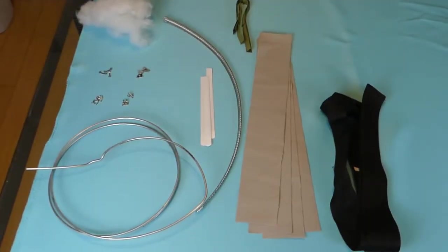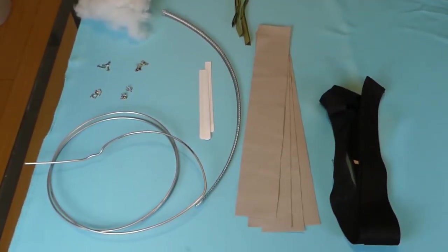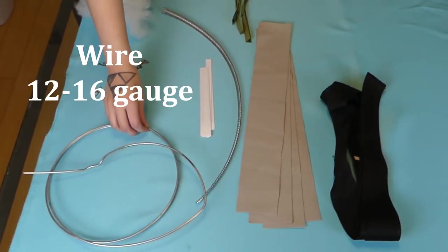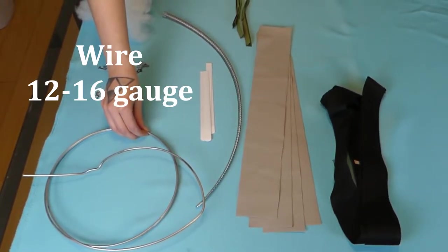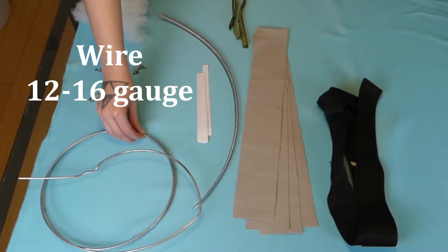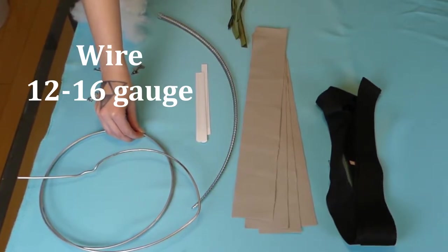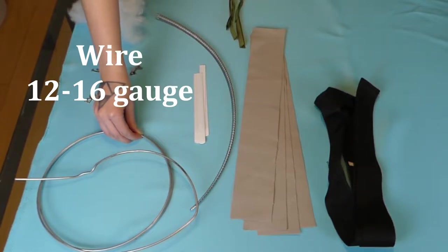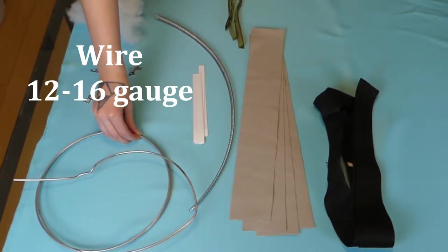Alright, let's start with the materials you're going to need. First off, you're going to need some wire. 12 gauge is what I used, but my tail was pretty long, so you could probably get away with 14 or even 16 gauge depending on the length of the tail. Remember, the lower the number, the thicker the wire is. You can get this at Home Depot, Lowe's, any hardware store.